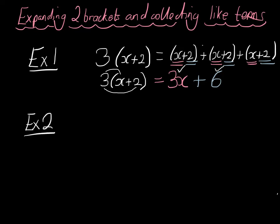Example 2. Copy this down. Let's try and do this quickly. 5(x+4). Rather than writing out 5 lots of x plus 4, let's just do it the quick way. 5 multiplied by x, a mathematician writes as 5x. And 5 multiplied by 4 is 20, and we're adding 20.